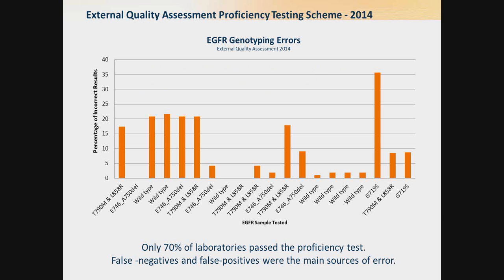That means that these labs, when they were trying to do their very best to get the right diagnostic result — as in a proficiency test — they still failed 30% of the time. False negatives and positives were the main sources of error, with the genotype that people had the most trouble with being G719S.